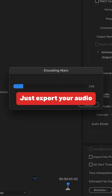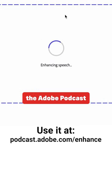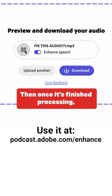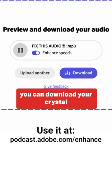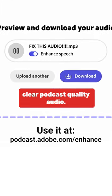Just export your audio, then drag and drop it into the Adobe Podcast Audio Enhancer. Then once it's finished processing, you can download your crystal clear podcast quality audio.